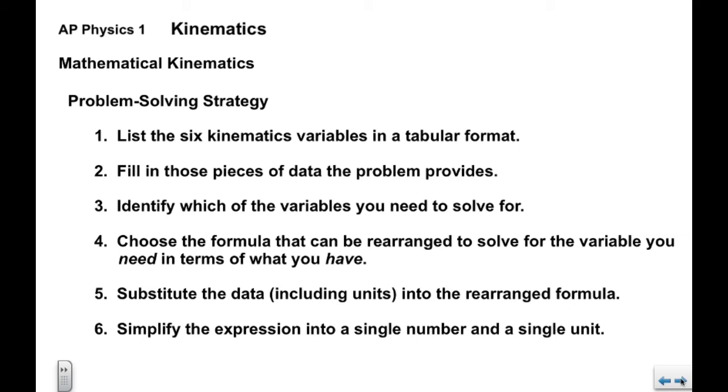Problem solving strategy for mathematical kinematics. First we're going to list the six kinematic variables in a tabular format. We're going to fill in the pieces of data that are provided by the problem. We're going to identify which variable we need. We then look at the formulas and decide which one we can use to solve for the variable we need in terms of the variables that we already have. That's really the physics. We're then going to substitute the data including units into the rearranged formula and then simplify the expression into a single number in a single unit.